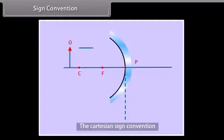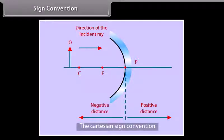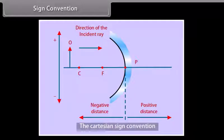Sign Convention: The distances measured in the direction of the incident ray are taken to be positive, and those measured in the opposite direction are taken to be negative. The heights measured upwards are taken to be positive, and those measured downwards are taken to be negative.